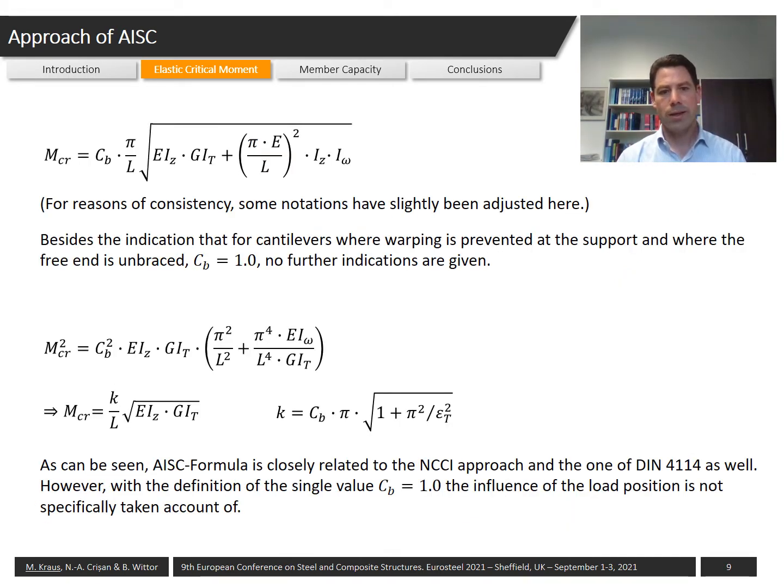The American standard provides the formula shown on this slide for the calculation of the elastic critical moment. At first sight it seems quite different to the formulations that we had seen on the previous slides. However, if we reform the equation we can come to the exact same formulation that we had seen. However, the American code only defines one C factor. In the American code it is defined as Cb equal to 1.0 for cantilever beams, and in doing so there is no possibility of taking into account different points of load applications for the structural member.